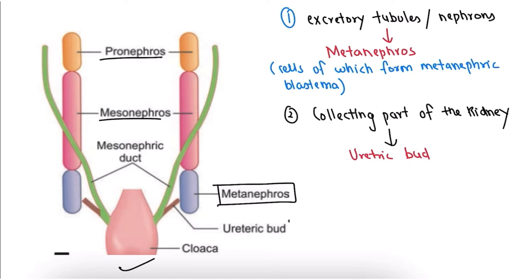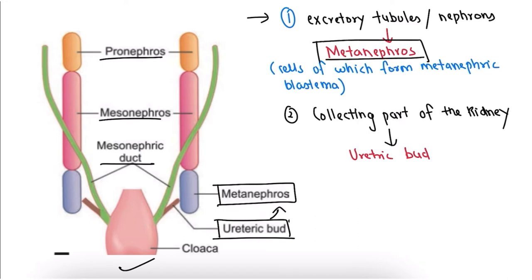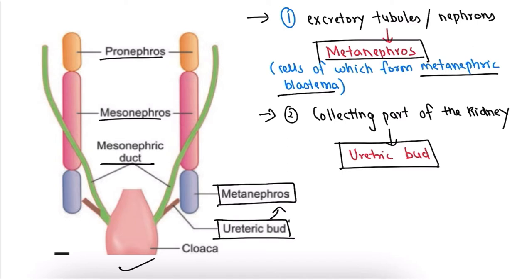The second main structure we will study is the ureteric bud, which arises just below the mesonephric duct and is connected to the metanephros. The excretory tubules and nephrons are formed from the metanephros — specifically from cells that form the metanephric blastema. The collecting part, or collecting duct, of the kidney is formed from the ureteric bud.